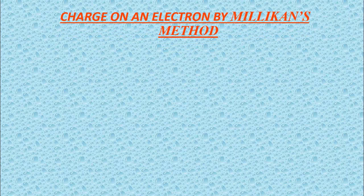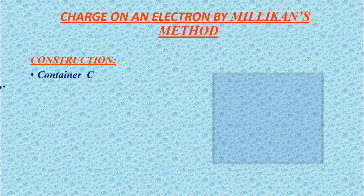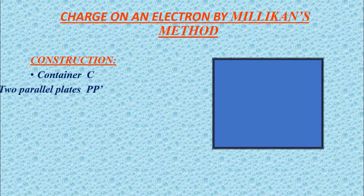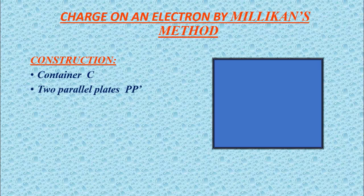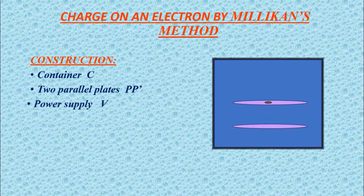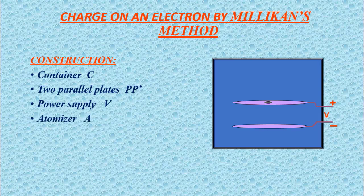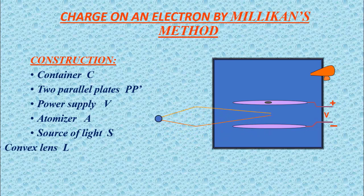To find the charge on the electron, we will discuss the apparatus. This apparatus is a container C, two parallel metal plates P and P dash, a power supply V, an atomizer A which sprays oil droplets, and a source of light S which illuminates the interior of the container.